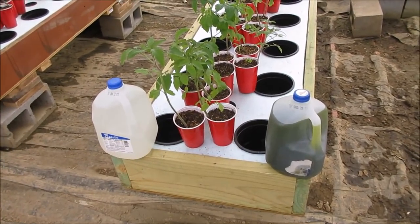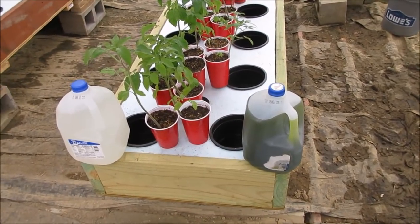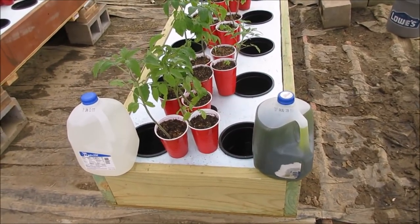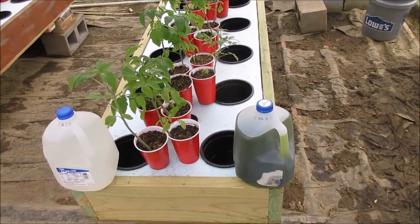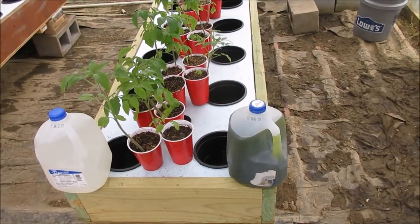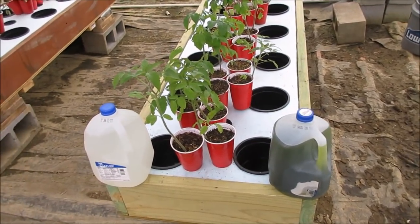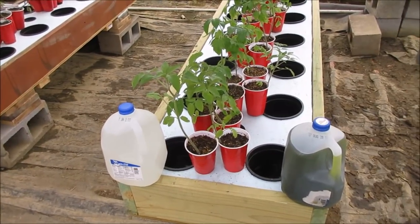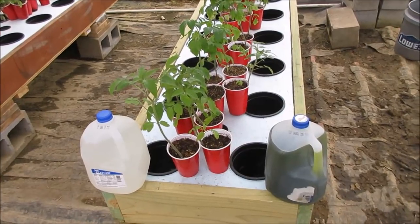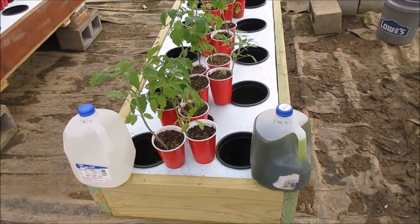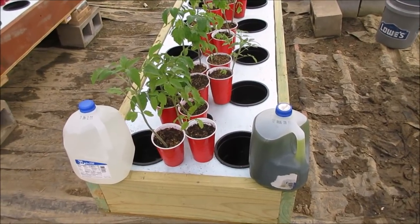All right, I've got two one-gallon measures of nutrient. On the right-hand side there, the green is Masterblend 4-18-38 and Epsom salt, enough for 150 gallons. I put it in there and mixed it with hot water, then I shook it. On the left side is calcium nitrate. I get both calcium nitrate and Masterblend from Oregon County Seeds. I get Epsom salt from Walmart.